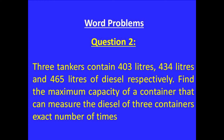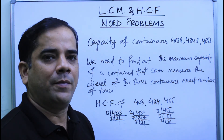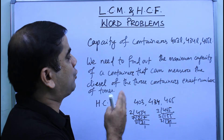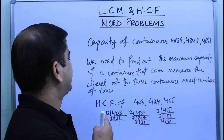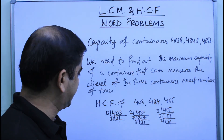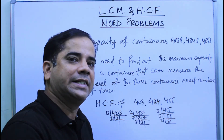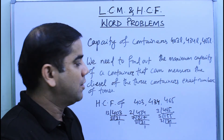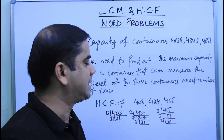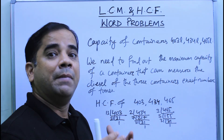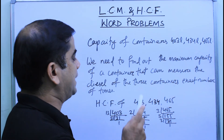The next problem: three containers hold 403 liters, 434 liters, and 465 liters of diesel respectively. Find the maximum capacity of a container that can measure the diesel of the three containers an exact number of times. To solve this, we write the capacity of containers — 403 liters, 434 liters, 465 liters — and we need to find the HCF of these three numbers, since the highest common factor divides all given numbers completely.